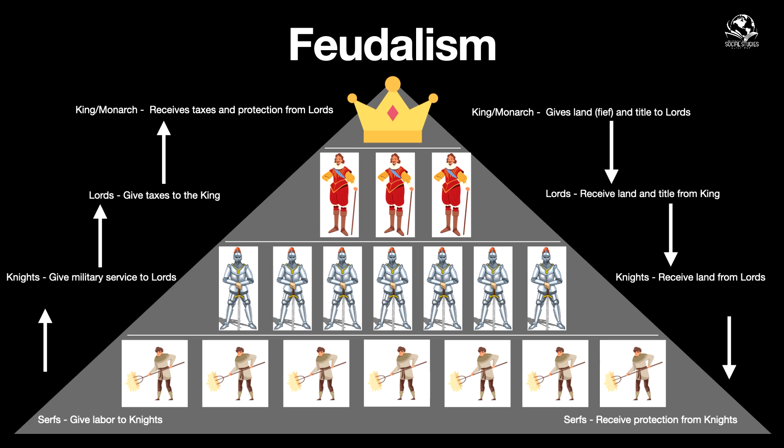On the right side of the chart: the king gives land called a fief and a title to the lord; the lord receives land and title from the king; the knight receives land from the lords; and serfs receive protection from the knights. On the left side: serfs give labor to the knights, growing the food everyone needs; knights give military service to the lords; lords give taxes to the king; and the king receives taxes and protection from the lords. Everyone is helping each other for the benefit of all.